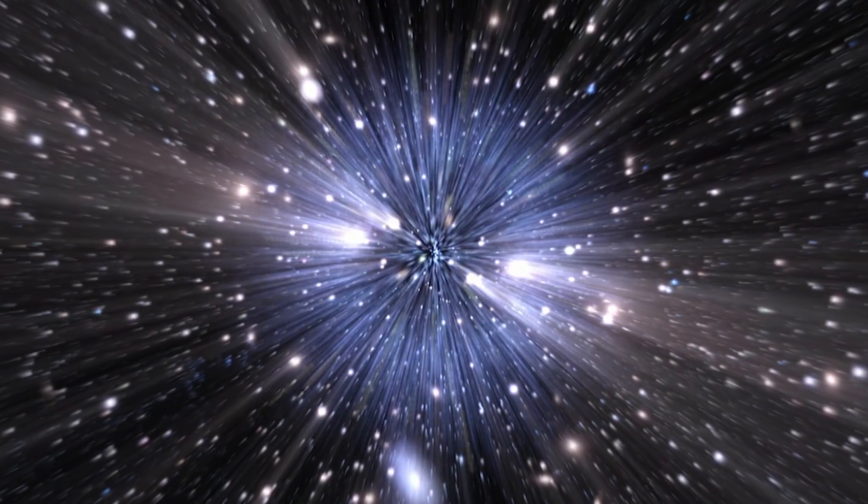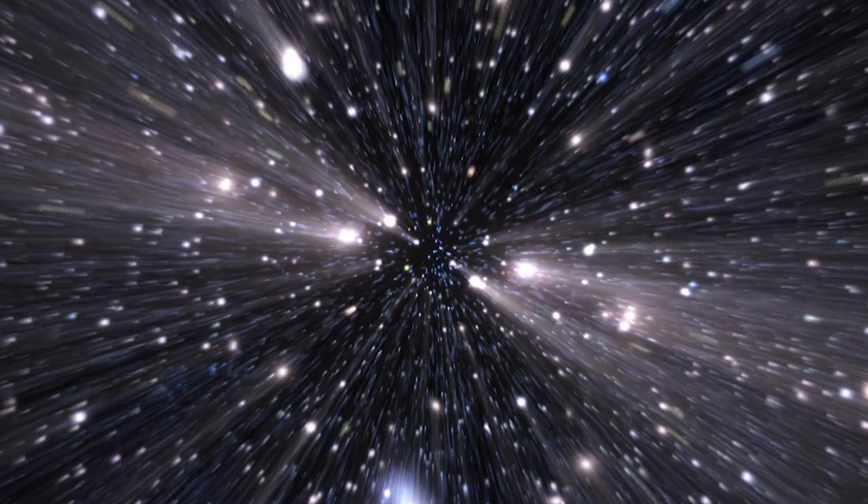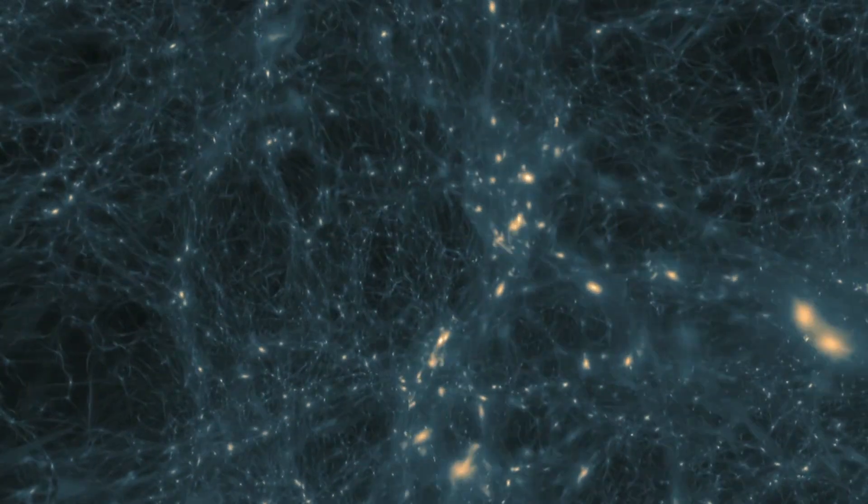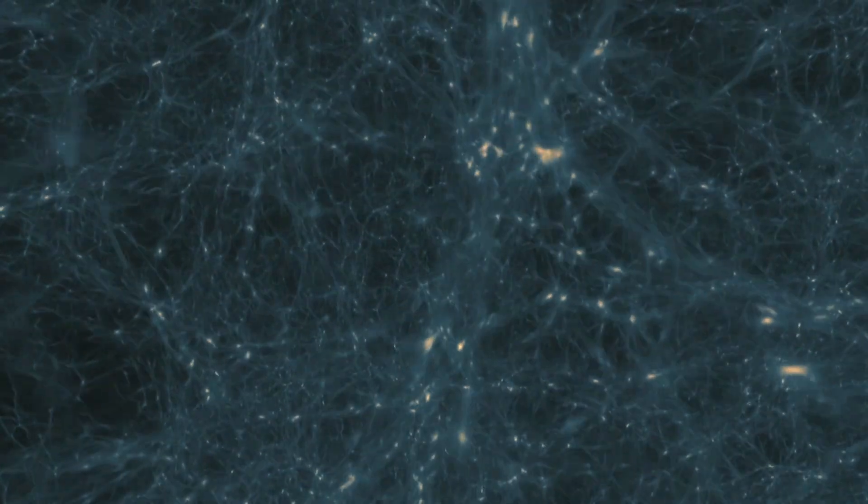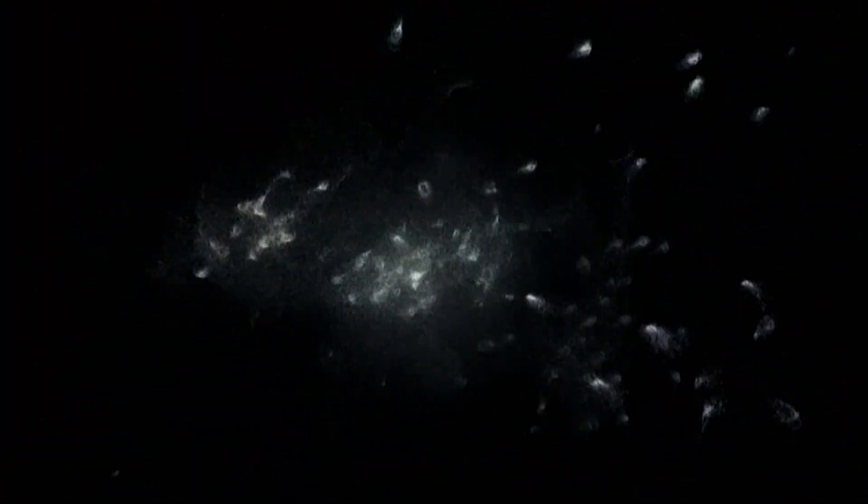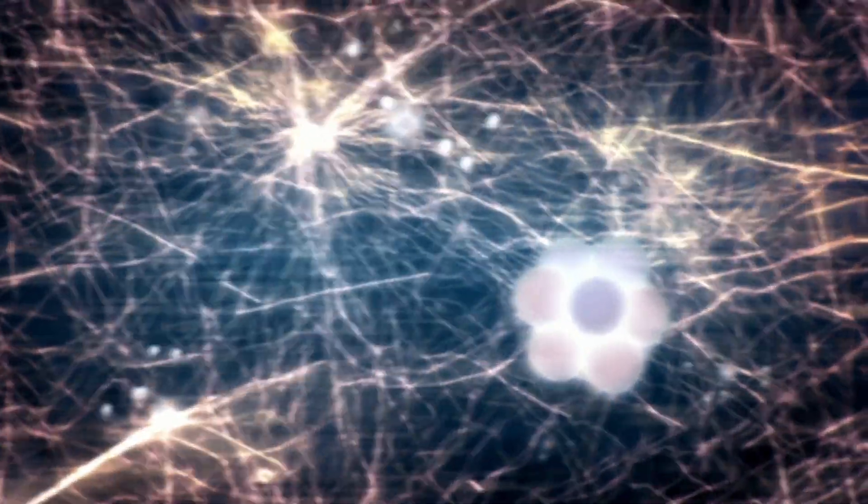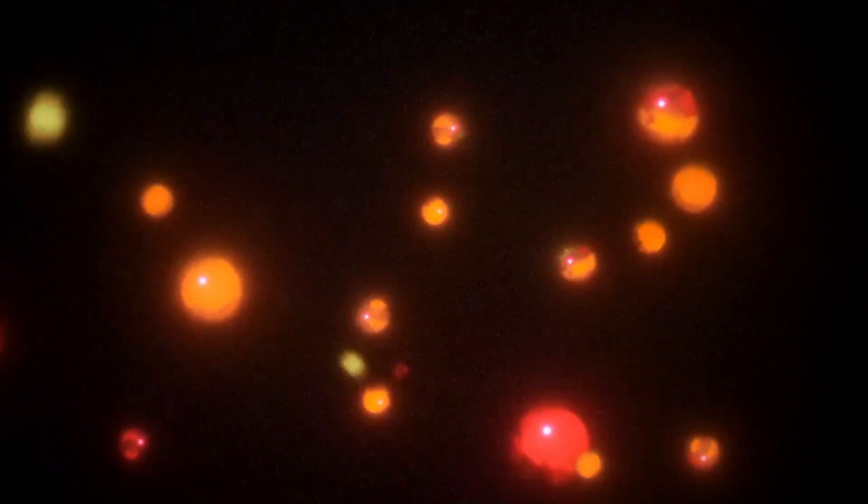When that happens, dark energy would first tear the galaxy population apart. Then, it would destroy the large-scale structures of the universe, such as the filaments and walls that we are currently observing. Then, individual galaxies, star systems, individual celestial bodies, and finally atoms and molecules would collapse, and finally, the universe would become an orderless chaos of scattered subatomic particles.